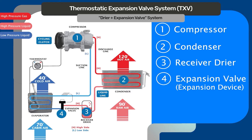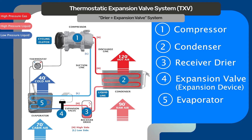This pressure change happens again at the expansion valve, where the refrigerant is slowed down and changes pressure. The low side refers to the side of the system shown in blue. Starting at the expansion valve, which creates low pressure, refrigerant travels to the evaporator where it transfers the heat from inside the vehicle, and then travels to the compressor where it is turned into high pressure and the whole process repeats again.